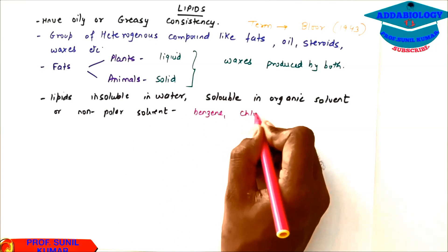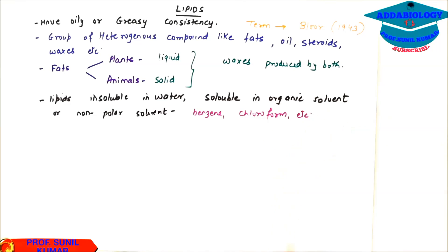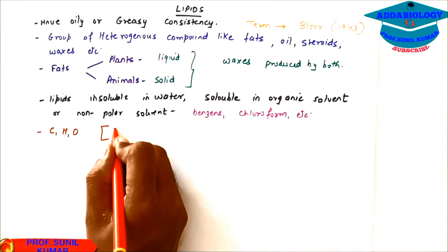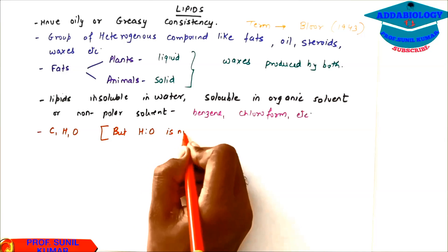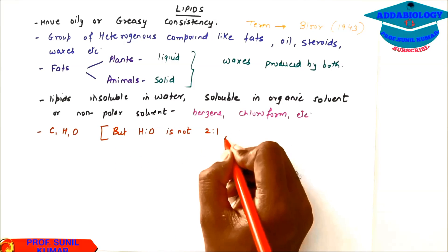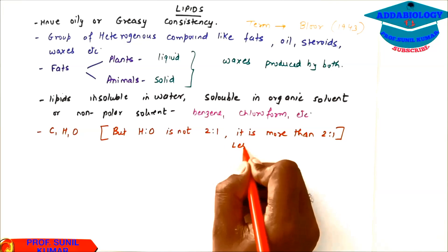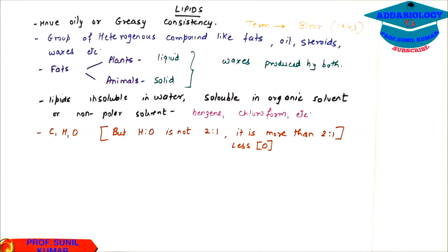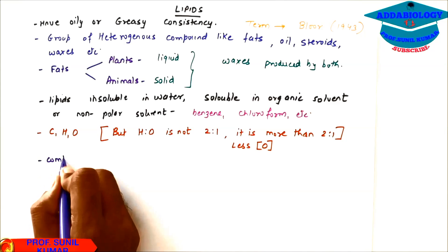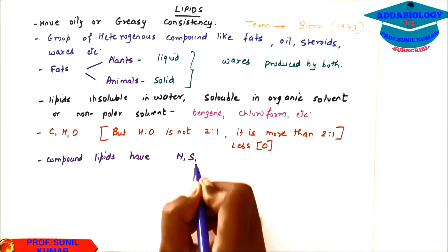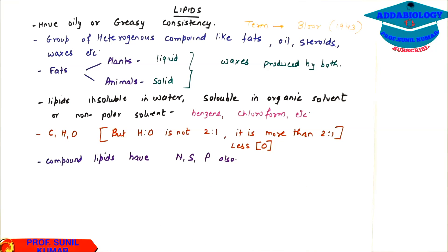As carbohydrate has one unit made up of carbon, hydrogen and oxygen, in the same way lipids are also made up of carbon, hydrogen and oxygen. But hydrogen and oxygen ratio is not 2:1, it is more than 2:1, meaning it has less oxygen and more hydrogen. Compound lipids have nitrogen, sulfur and phosphorus also along with C, H and O.